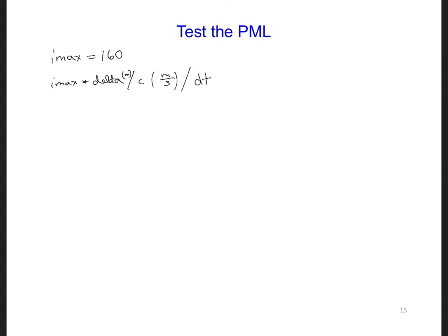And then if we divide by dt, we'll get number of time steps. So 252 time steps.